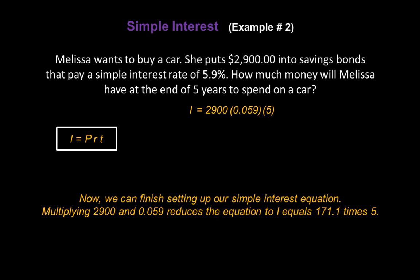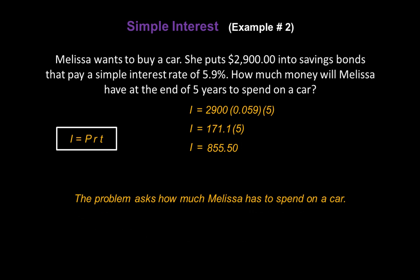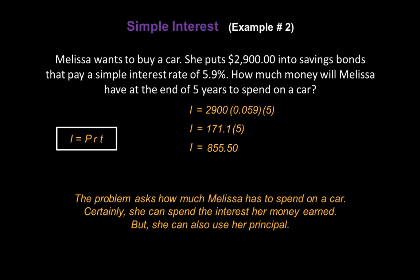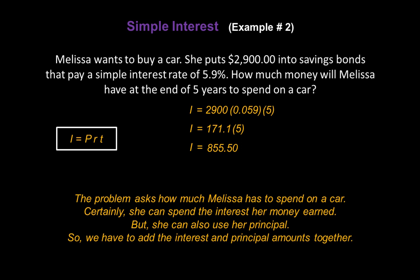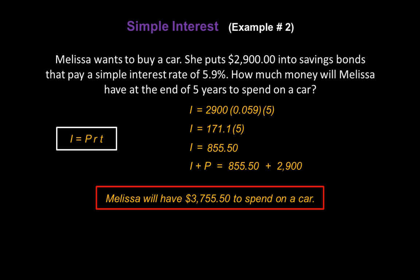We multiply 2,900 and 0.059 together, which reduces the equation to I equals 171.1 times 5. Multiplying 171.1 and 5 together gives us a total amount of interest of $855.50. But that's not the answer to this problem. The problem asks how much Melissa has to spend on a car. She can spend the interest her money earned — $855.50 — but she can also use her principal, the $2,900 she started with. So we add the interest and principal together to get the total. Melissa will have $3,755.50 to spend on a car.